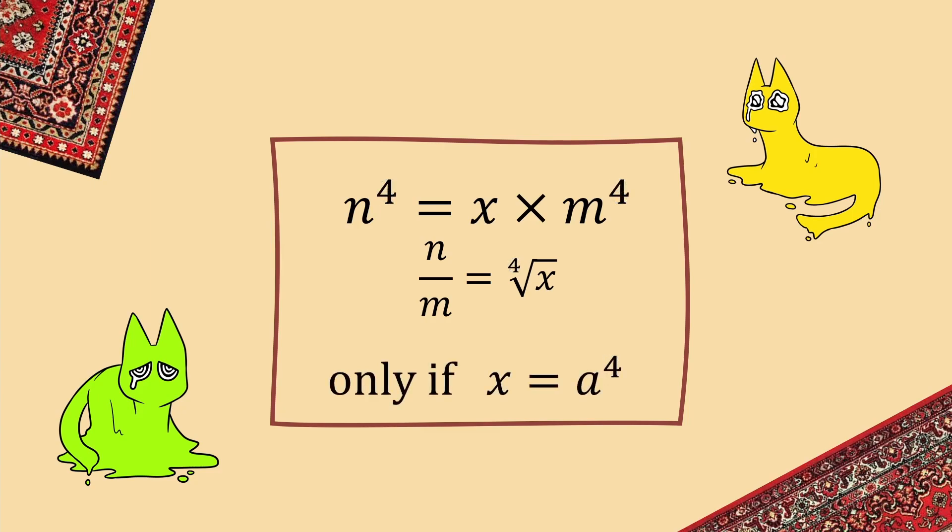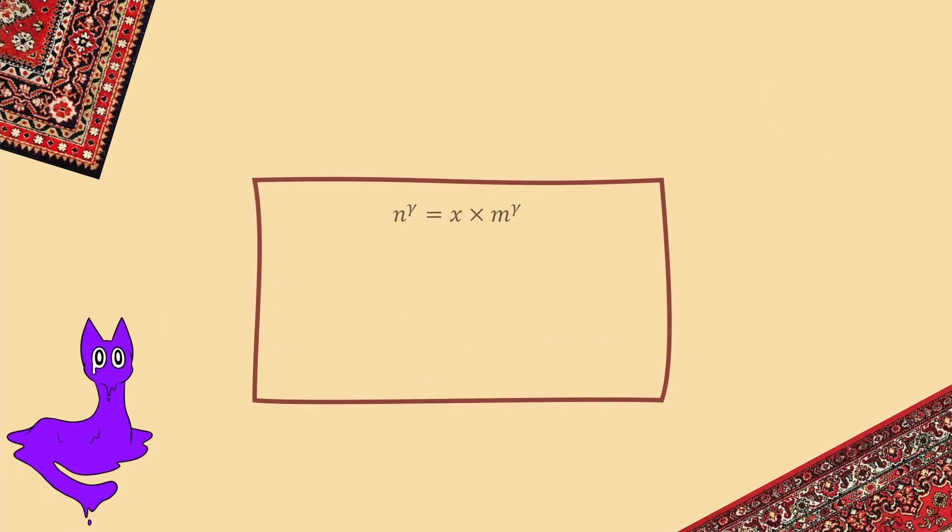And the same is true for fourth powers, and for fifth powers. In fact, this generalizes no matter how high you want it to go. The proof isn't exactly pretty, but let's take a look at it. So, assume that x here is not a power of gamma, meaning that y and z will not be multiples of gamma.